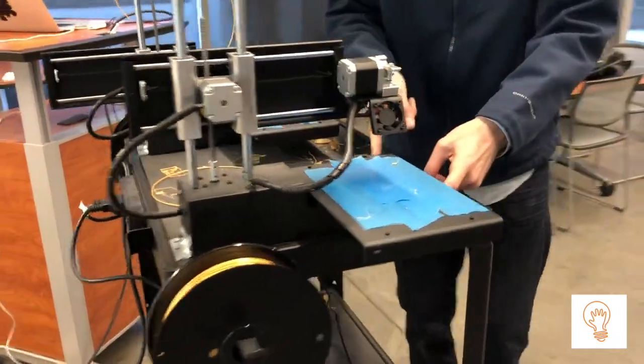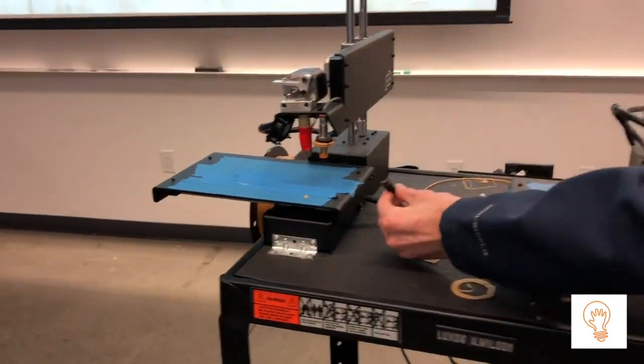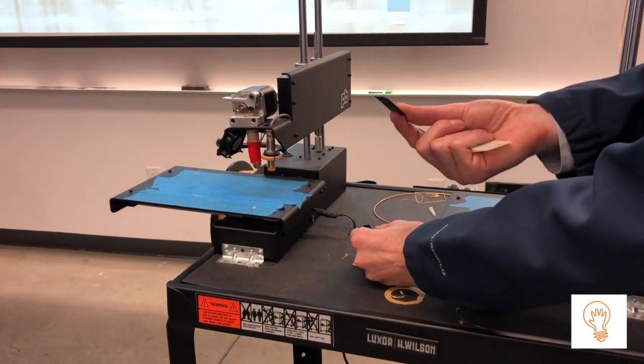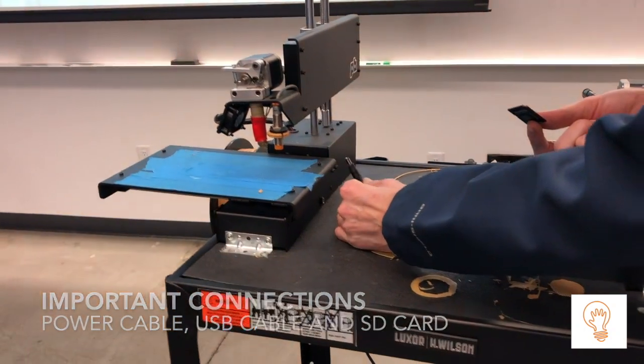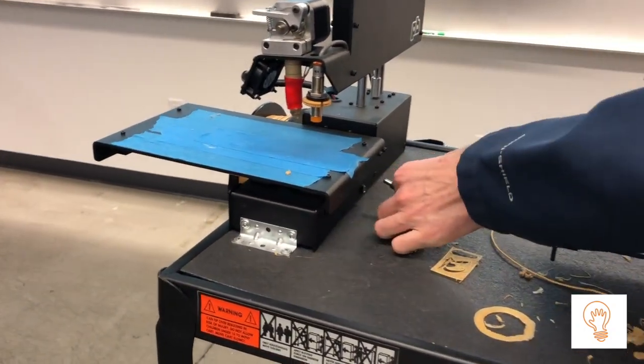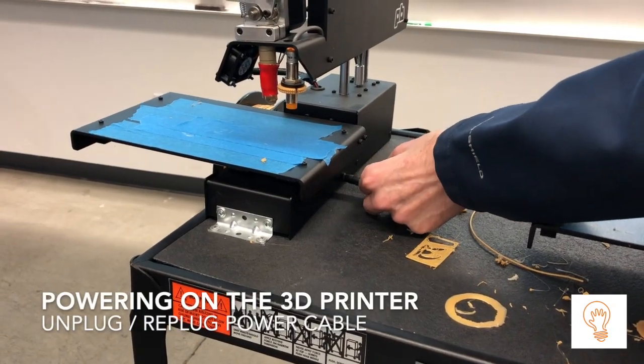On this side you'll see one power cable and one USB cable. Since we're using the SD card, we don't need the USB cable. We're just going to plug in and unplug the 3D printer to turn it on and off.